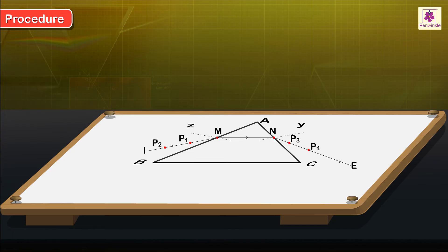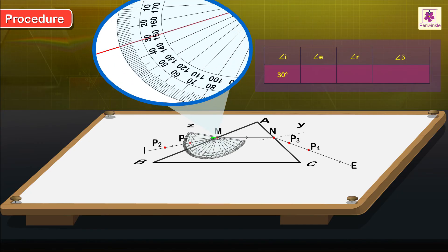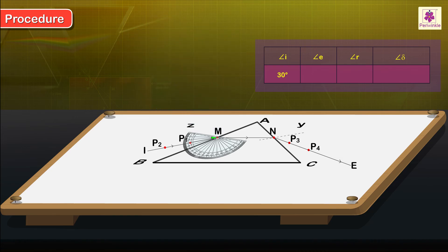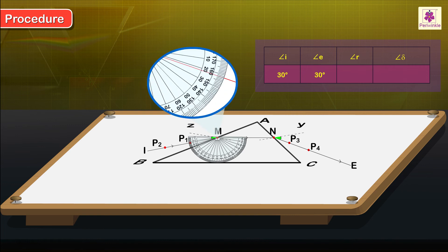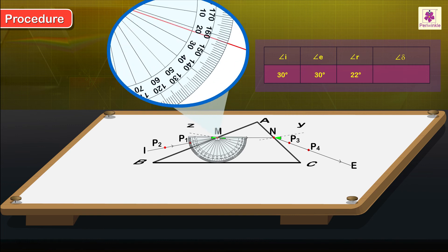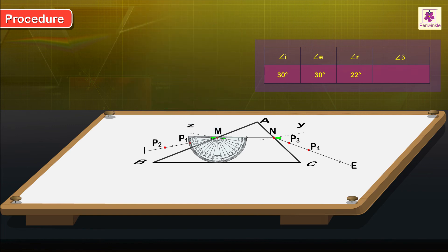Measure the angle of incidence, angle of emergence, and angle of refraction. Label them as i, r, and e respectively.